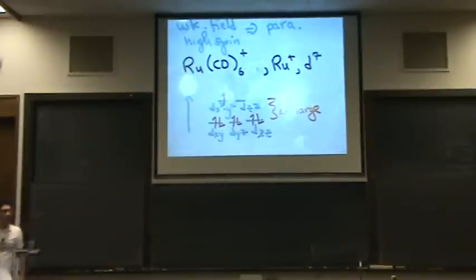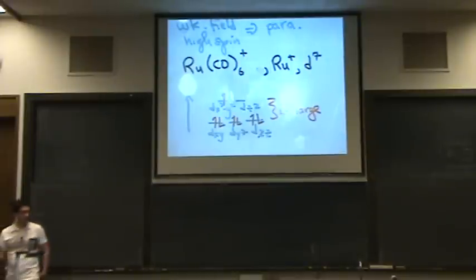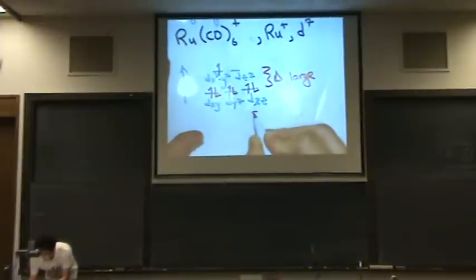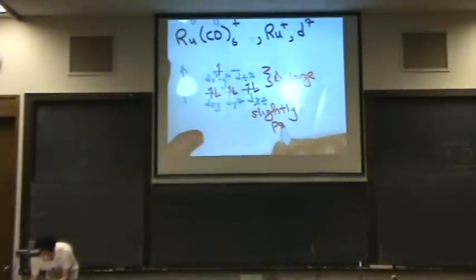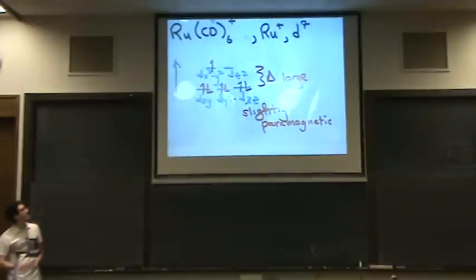So we want to see the magnetism. This is slightly paramagnetic. It has one unpaired electron. So we would say, oh, it's slightly paramagnetic. The more unpaired electrons it has, the more paramagnetic it is.